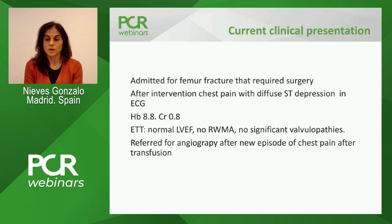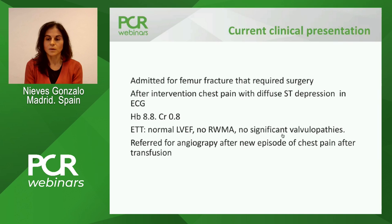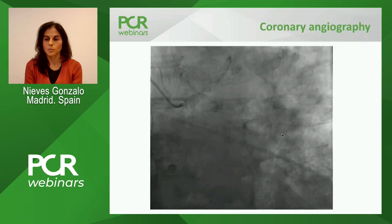His current clinical presentation: he was admitted with a femoral fracture that required surgery, and after the intervention, in relation with bleeding during the intervention, he had chest pain with diffuse ST depression on the ECG. He had anemia with a hemoglobin of around eight and a creatinine that was normal. An echo was performed showing normal ejection fraction without wall motion abnormalities and no significant valvulopathy. The patient had transfusion, but after that, with an almost normal level of hemoglobin, he had again chest pain, which was the reason why he was referred for angiography.